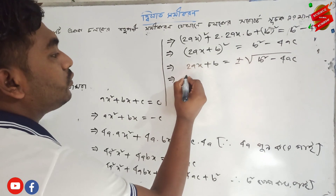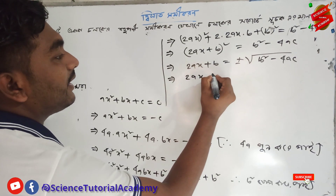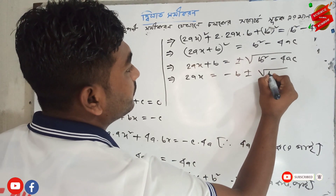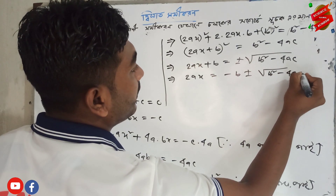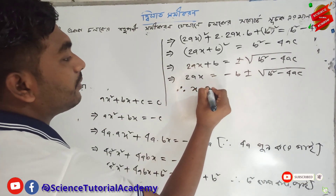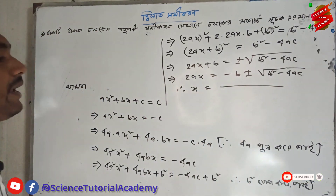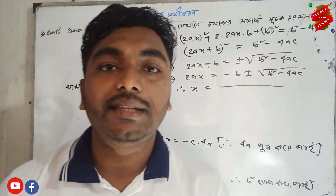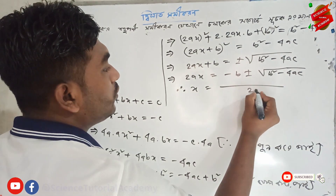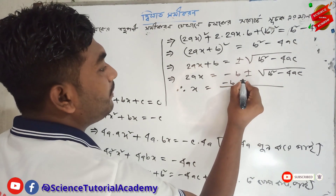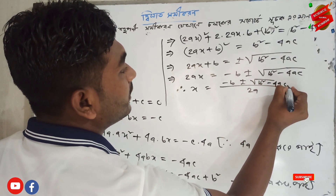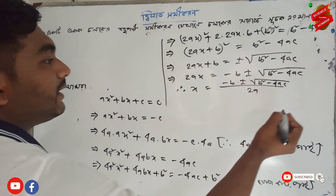We have 2ax, we have minus b, plus or minus root over b squared minus 4ac. x equals 2a minus b, plus or minus root over b squared minus 4ac.